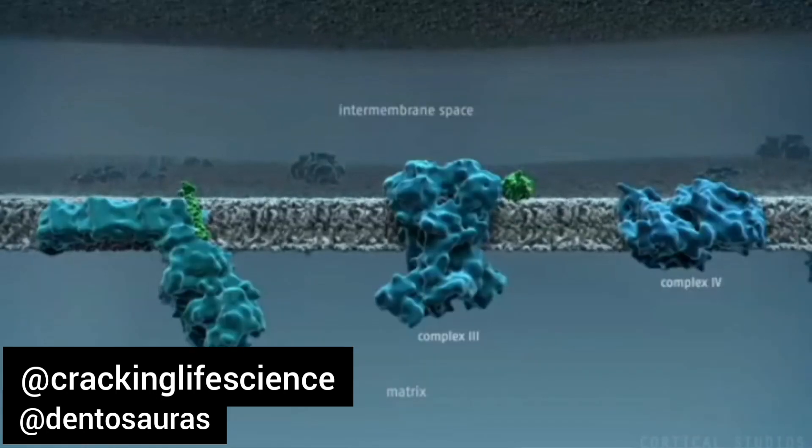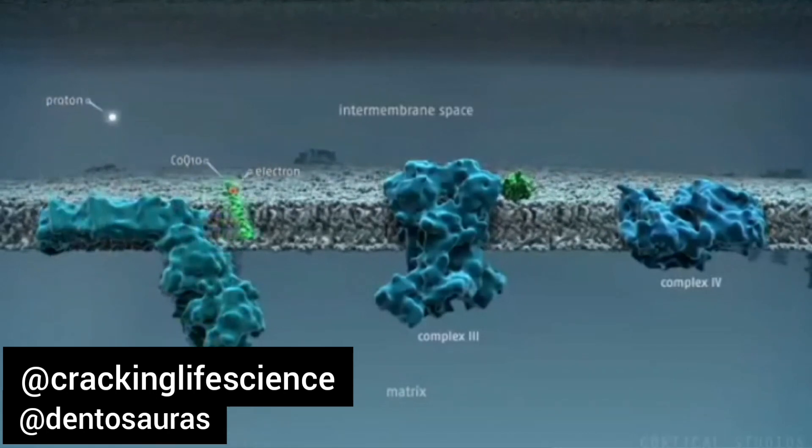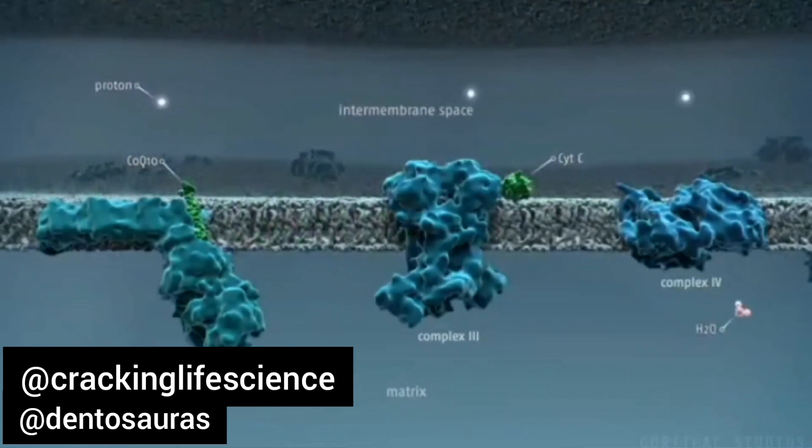Nutrients provide high energy electrons in the form of NADH, which are used by the protein complexes to pump protons from the matrix to the intermembrane space.